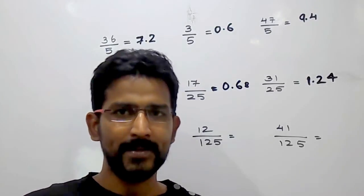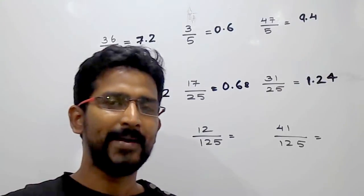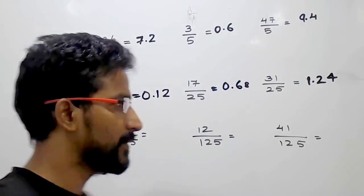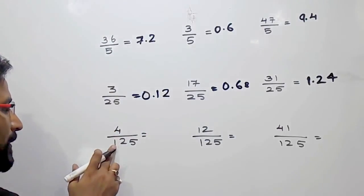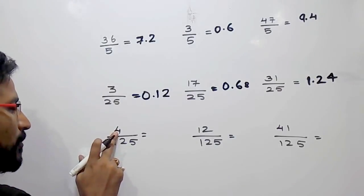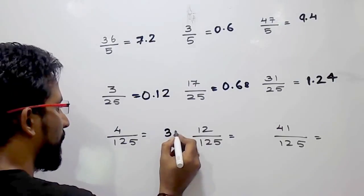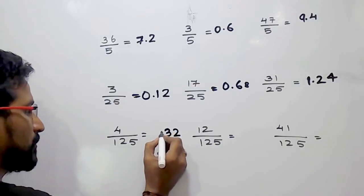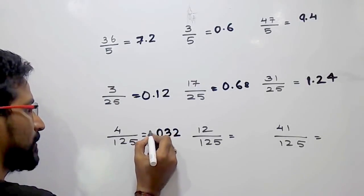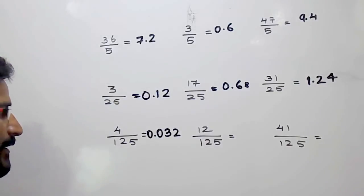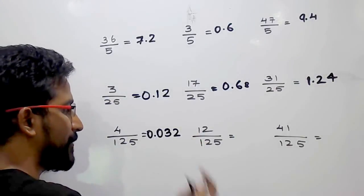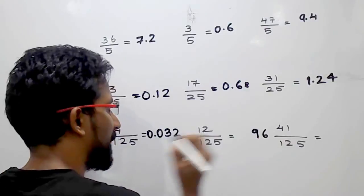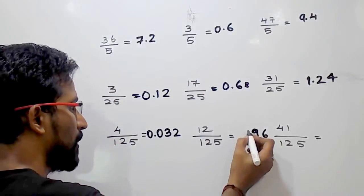If you want to divide any number by 125, multiply that number by 8 and put the decimal after three values from the right. For example, 4 divided by 125: multiply 4 by 8, which gives 32. We put the decimal after three numbers — there is no third digit, so we place 0.032. Now 12 divided by 125: 12 times 8 is 96. Put the decimal after three numbers — 0.096.